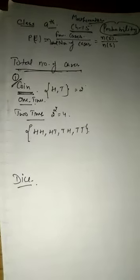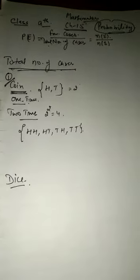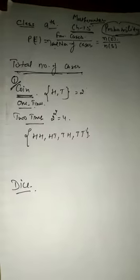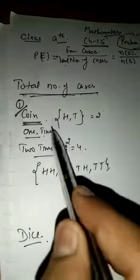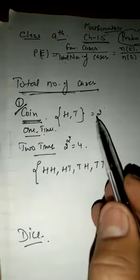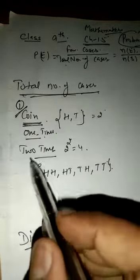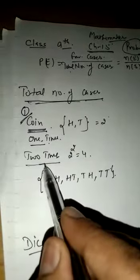Welcome back students. In the second part of today's video, due to some technical problem the video stopped. In this part, we will discuss tosses of coins. If one coin is tossed one time, we get two outcomes: head and tail, means two outcomes. If we toss one coin two times or two coins one time—same thing—we get the outcome 2 raised to power 2.